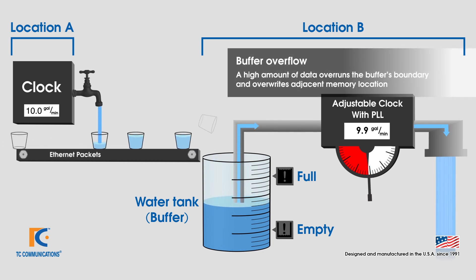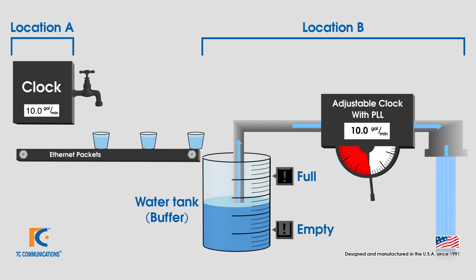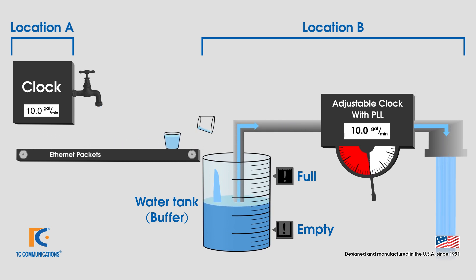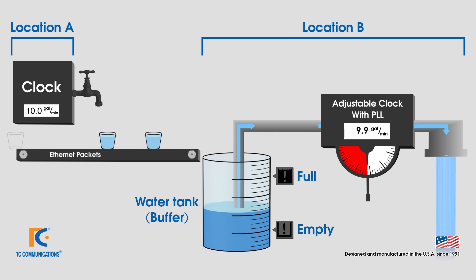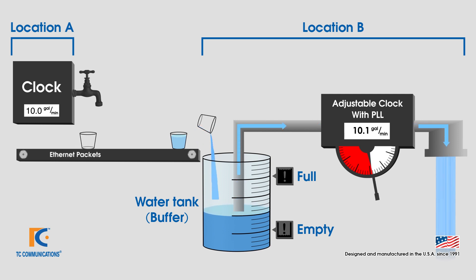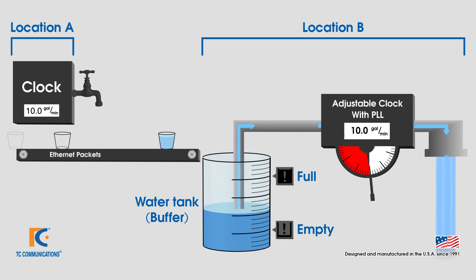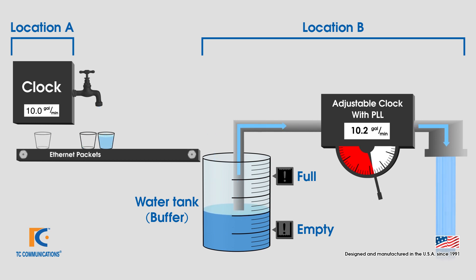To compensate for this, we vary the output rate to keep the buffer from emptying or overflowing, adding indicators to show the level. This means the flow can be slowed to stop the buffer from emptying. Conversely, a higher flow rate will be used to stop the buffer from overflowing.